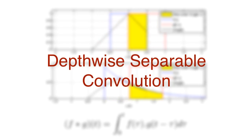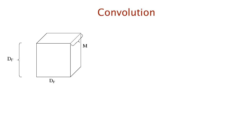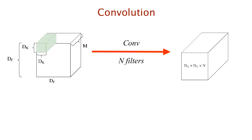Let's first very quickly go over the basics of convolution on an input volume. Consider an input volume f of shape df × df × m, where df is the width and height of the input volume and m is the number of input channels. If a color image was the input, then m would equal 3 for the R, G, and B channels. We apply convolution on a kernel k of shape dk × dk × m, which gives us an output of shape dg × dg × 1.